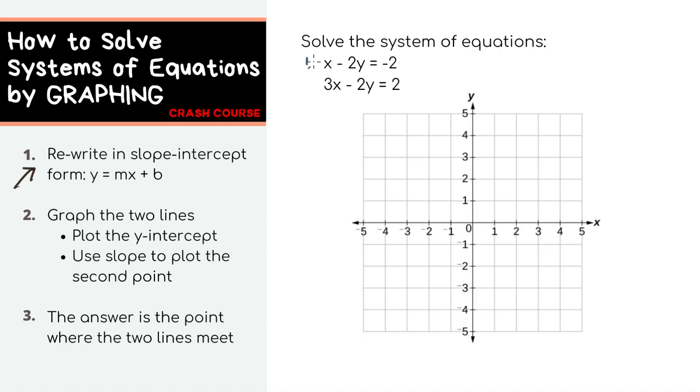For the first equation, let's subtract x from both sides and divide by negative 2. For the second equation, let's subtract 3x from both sides and divide by negative 2.